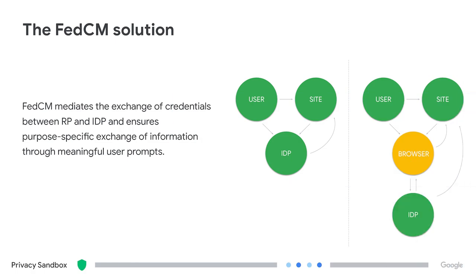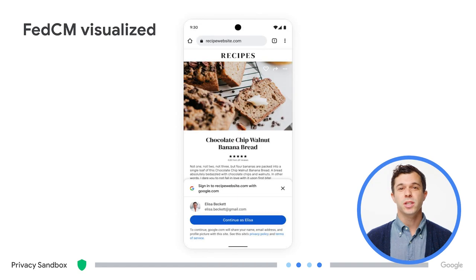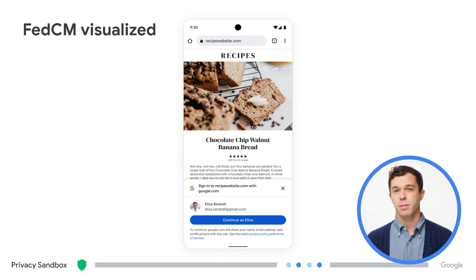This type of login definitely helps users — it avoids the proliferation of usernames and passwords and it really should be part of the web. However, it's often built on technologies that enable tracking, like third-party cookies. It would be great if browsers had a way to distinguish valid Federated Identity flows. That's where FedCM comes in. FedCM mediates the exchange of information between the user, the site, and the IDP to ensure that the user is informed and has the opportunity to provide consent. With the new API, identity is federated so user identities can't be linked.